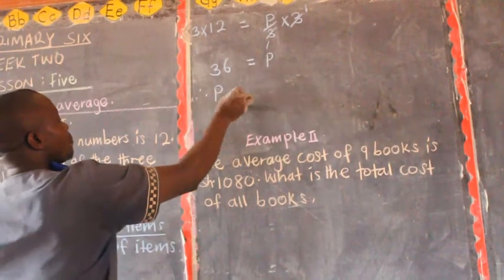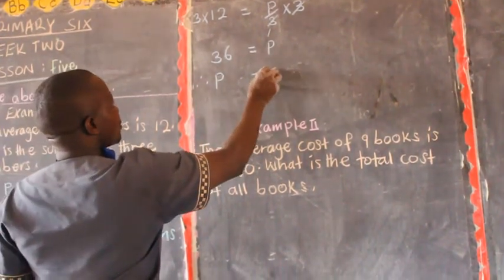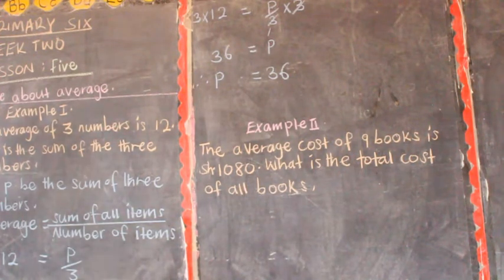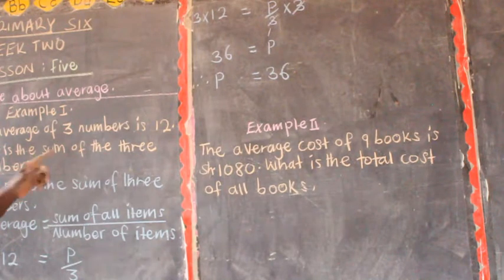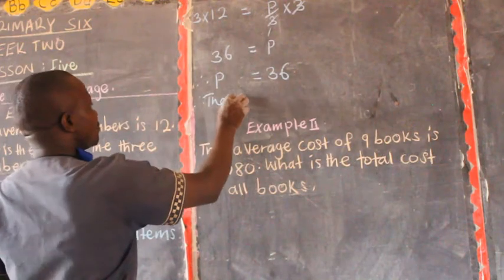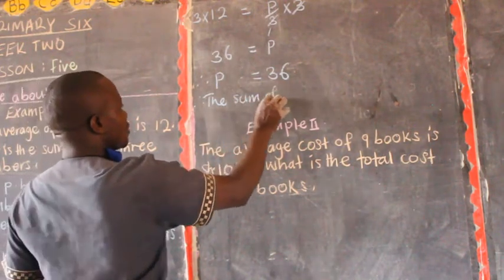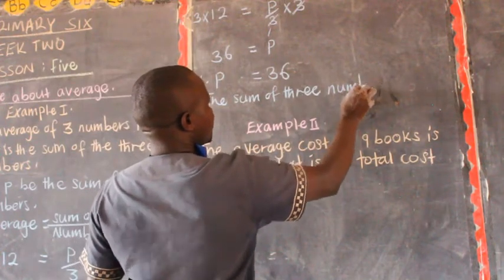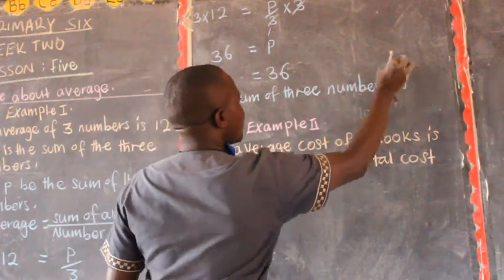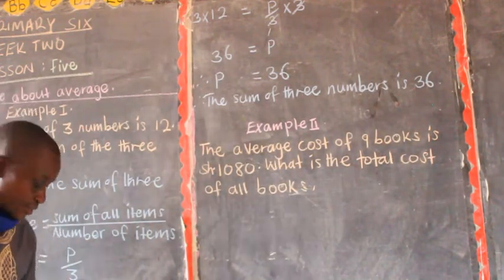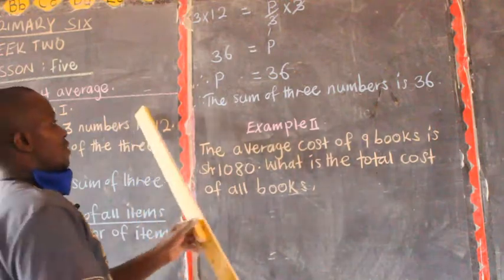Therefore, P is equal to 36, and the sum of the three numbers is 36. Because the question asks: what is the sum of three numbers? Therefore, the sum of three numbers is 36. That is our final answer.